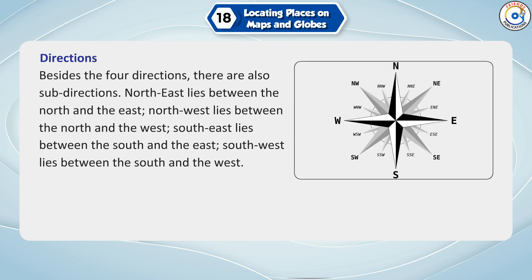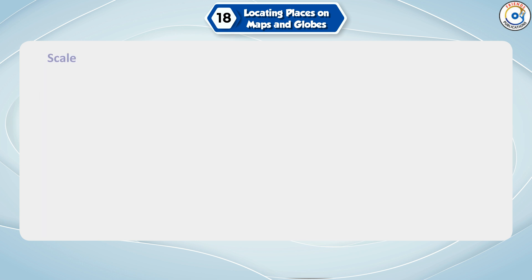Besides the four main directions, there are also sub-directions. North-east lies between the north and the east. North-west lies between the north and the west. South-east lies between the south and the east. South-west lies between the south and the west.